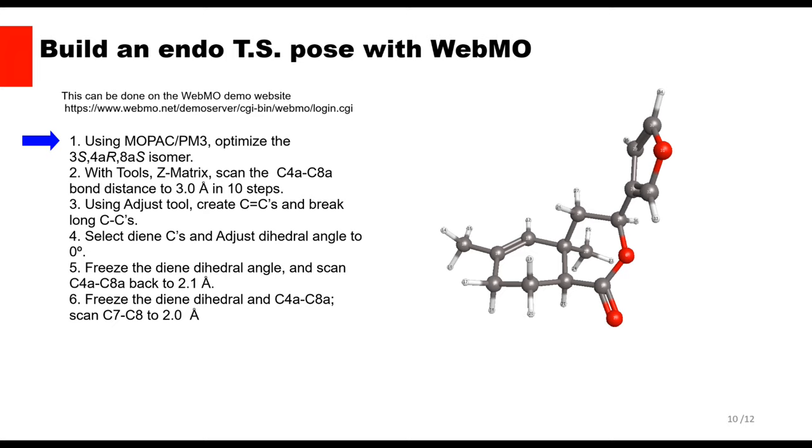Now click New Job Using This Geometry and Tools Edit ZMatrix. Find the entries for the C4A, C8A bond, which here are atoms 3 and 4. Enter S for scan, and the final distance, say 3 angstroms, and the number of steps, say 10. Here is the result with long bonds.